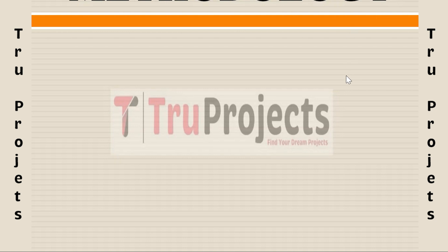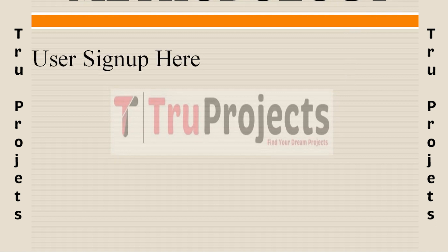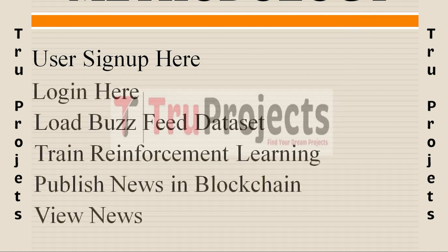To implement this project, the following modules were designed. The first module is 'New User Sign Up,' which provides a user interface for new users to create an account. User details are securely stored in the blockchain using smart contracts, ensuring transparency and immutability. The 'User Login' module allows registered users to log in using their credentials and access the platform's functionalities to contribute to fake news detection.